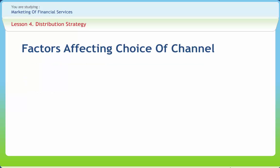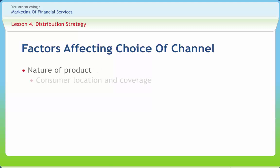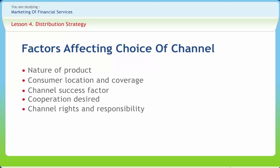Now let's discuss factors affecting channel of distribution. They are: nature of product, consumer location and coverage, channel success factors, cooperation desired, channel rights and responsibility, and capital requirements. Regarding the nature of products — perishable products need faster means to avoid deterioration and bulk product needs slow and cheaper means. Products that need installation and maintenance may need skilled channel members, which will influence the choice of channels.